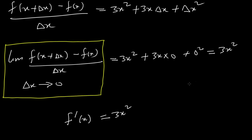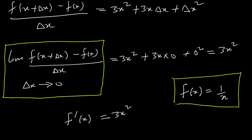This method can be applied to any example. For practice, try finding the derivative of f(x) = 1/x using first principles, and feel free to give the answer in the comments below. Remember: change every occurrence of x to x + dx, expand the bracket, subtract f(x) from both sides, divide through by dx, and find the limit as dx tends to 0. Thank you and I'll see you in the next tutorial.